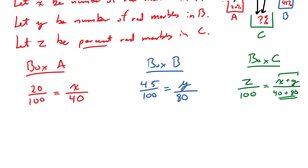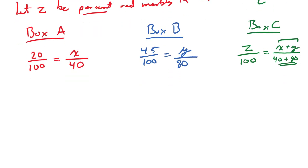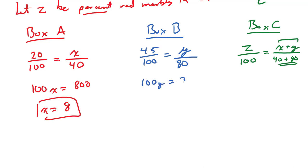Let's solve for X using box A and Y using box B, then substitute into the equation for box C. Cross multiply and divide both sides by 100: X equals 8. For box B, cross multiply and divide both sides by 100: Y equals 36. These are exact numbers — you can't have half a marble, so technically there are infinite significant digits here. I have 8 red marbles in box A and 36 red marbles in box B.